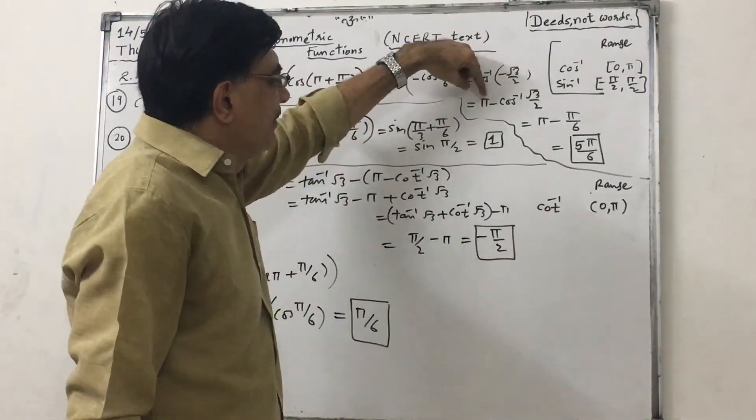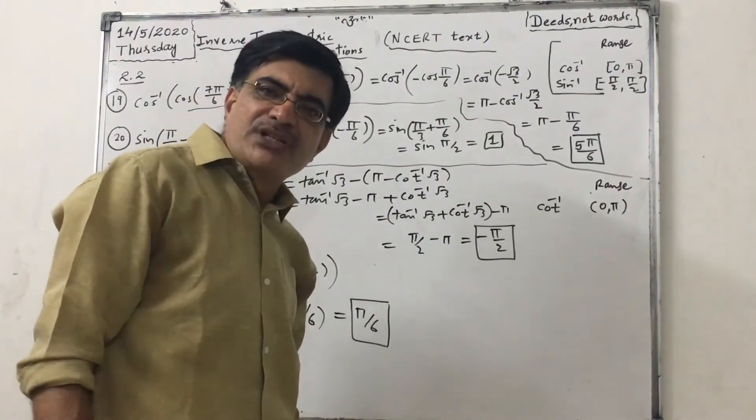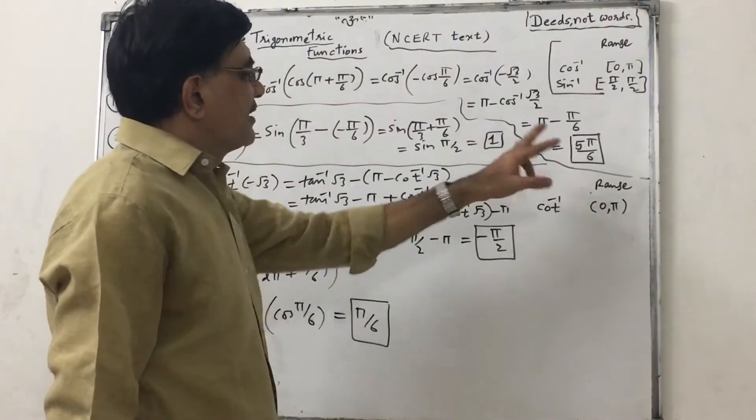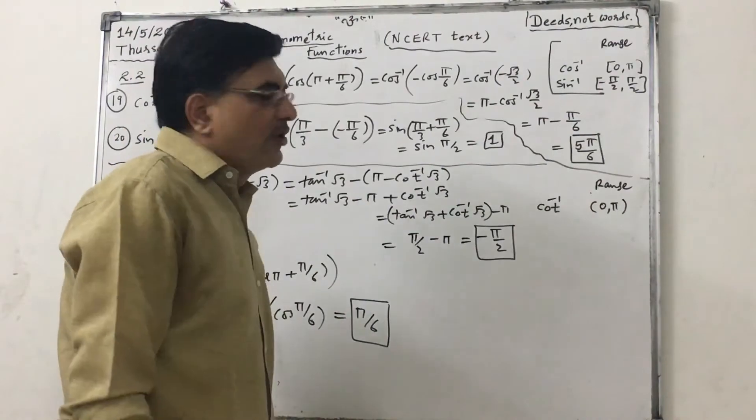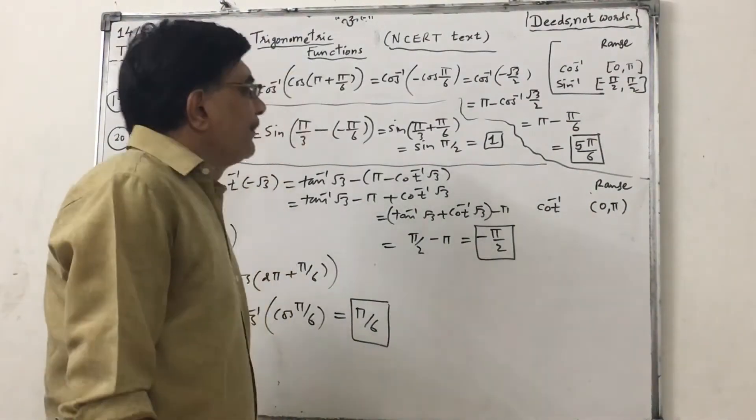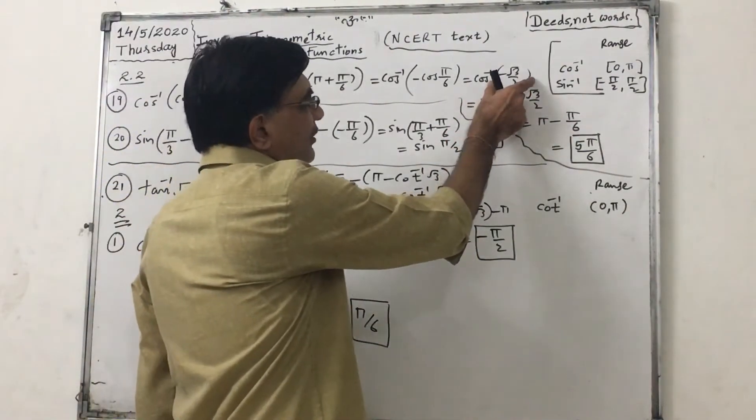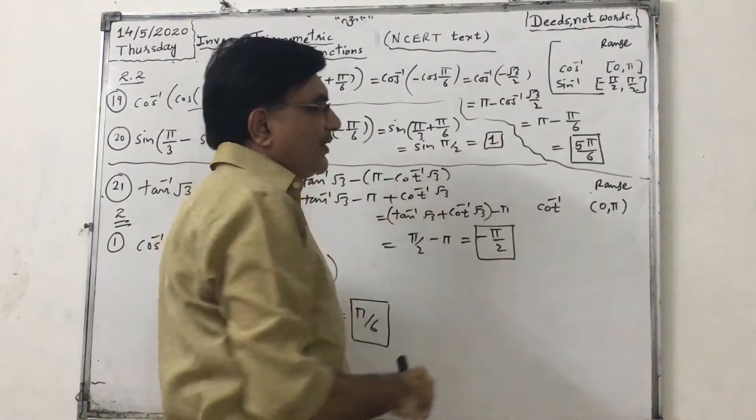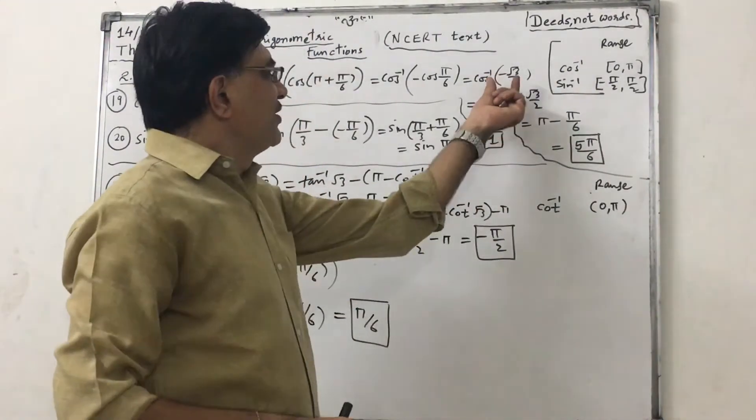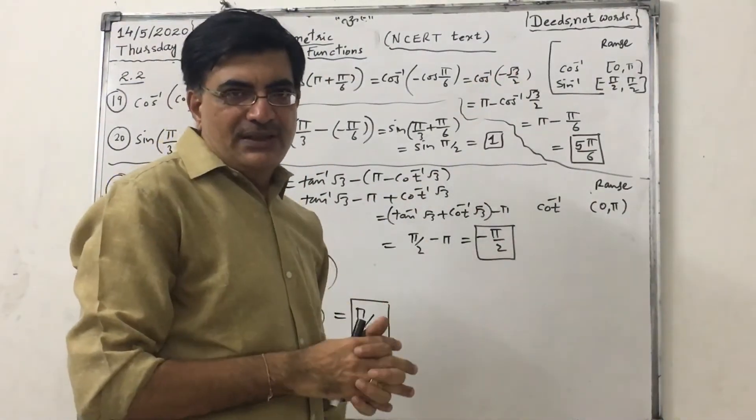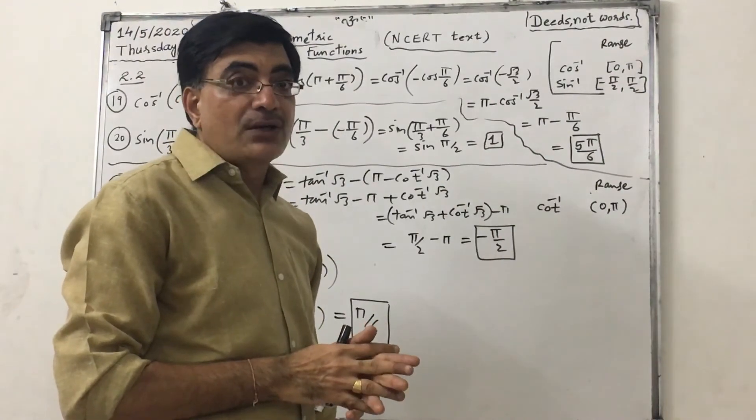So it can be written as π minus cos inverse of root 3 by 2. So π minus π by 6, answer is 5π by 6. This value is from domain of cos inverse, but it is negative, so it is in second quadrant.